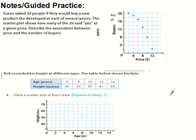So Susan asked 20 people if they would buy a new product she developed at each of several prices. The scatter plot shows how many of the 20 said yes at a given price. Describe the association between the price and the number of buyers.